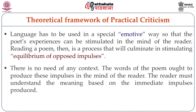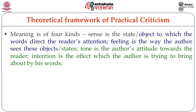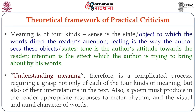There is no need of any context. The words of the poem ought to produce these impulses in the mind of the reader. The reader must understand the meaning based on the immediate impulses produced. The meaning itself is of four kinds: sense — the state or object to which the words direct the reader's attention; feeling — the way the author sees these objects or states; tone — the author's attitude towards the reader; and intention — the effect which the author is trying to bring about by his words. Understanding meaning is therefore a complicated process requiring a grasp not only of each of the four kinds of meaning but also of the interrelations in the text.